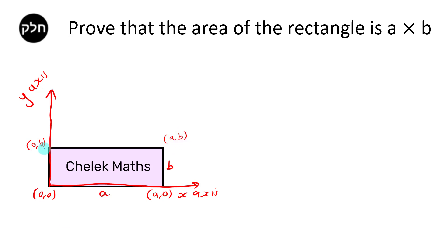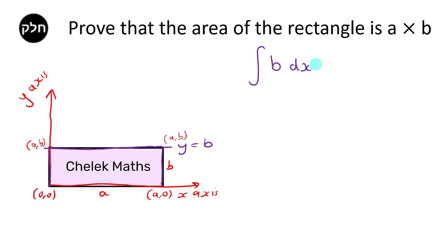We can say that this line here is the line y equals B. That is the equation of that straight line. And really, what we want to do is find the area under the curve y equals B between here and here. What that means is we're doing an integration of the function y equals B in terms of x, between a lower bound of 0 and an upper bound of A.